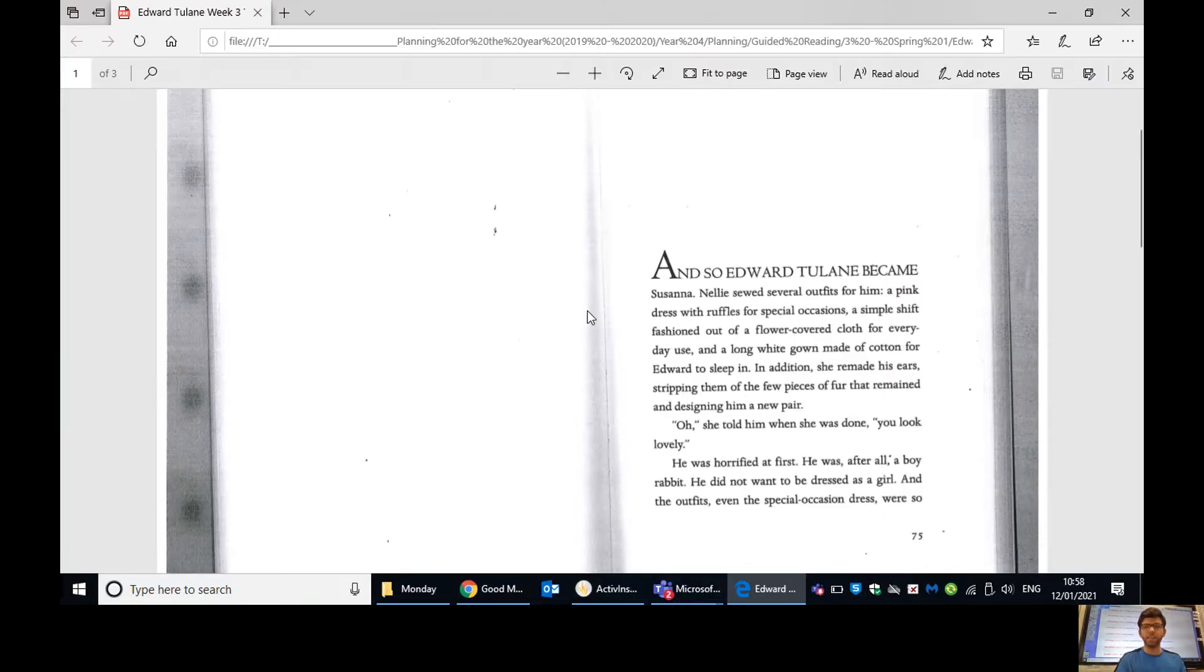So we are going to move on to the next chapter of Edward Tulane. Hopefully you can see that in front of you. Please make sure that you're following on either your own sheet or on this page here. So, let's start. So remember, Edward is just with the fisherman, Lawrence, and his wife, Nellie, as well. So with his new owners, and they're trying to look for clothes for him. And so Edward Tulane became Susanna. Nellie sewed several outfits for him, a pink dress with ruffles for special occasions, a simple shift fashioned out of a flower-covered cloth for everyday use, and a long white gown made of cotton for Edward to sleep in. In addition, she remade his ears, stripping them of a few pieces of fur that remained, and designing him a new pair.